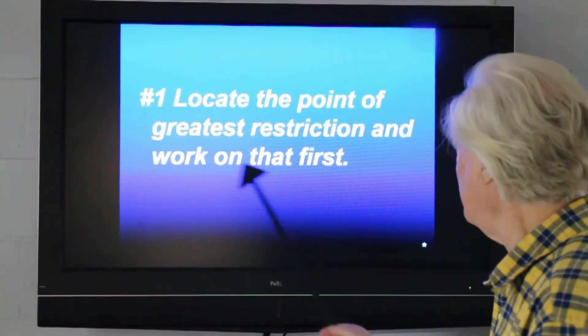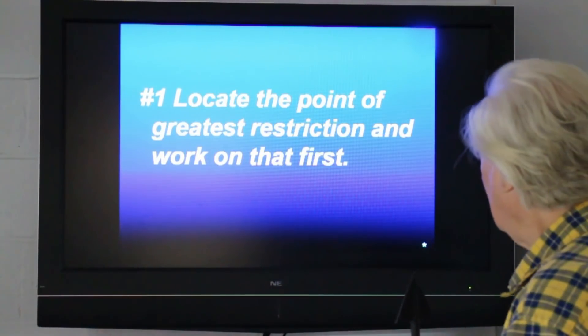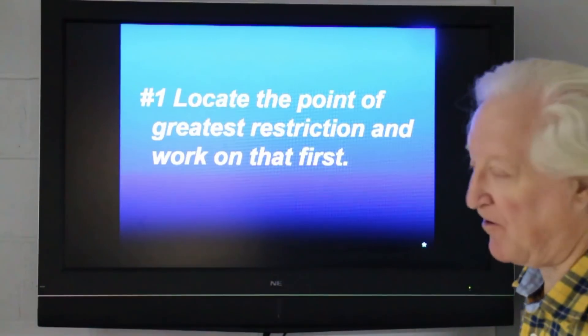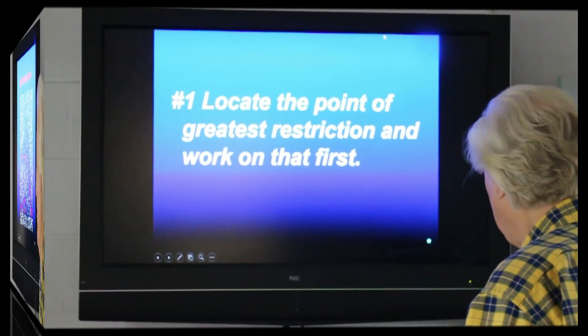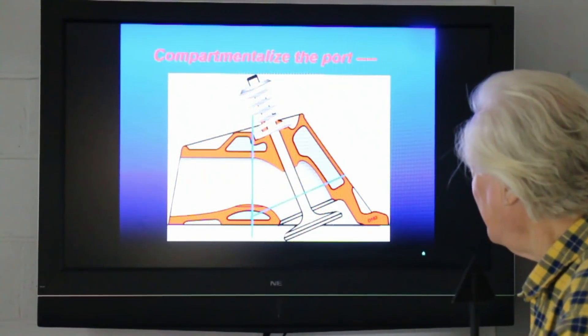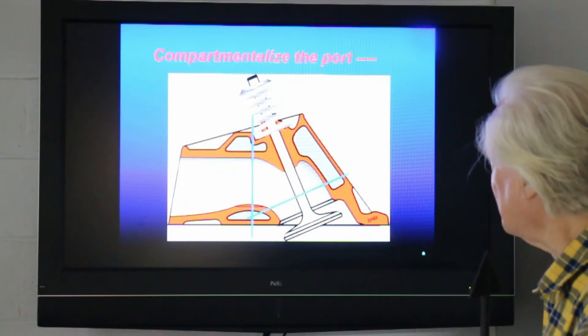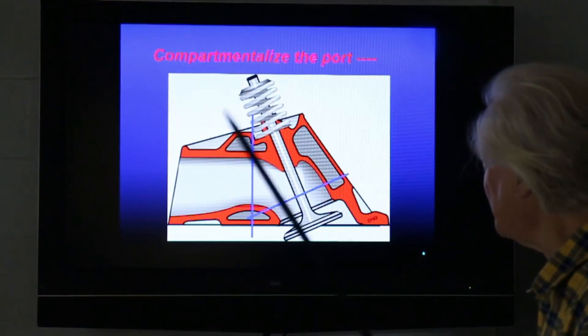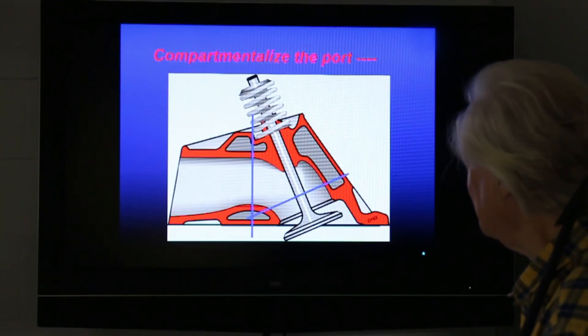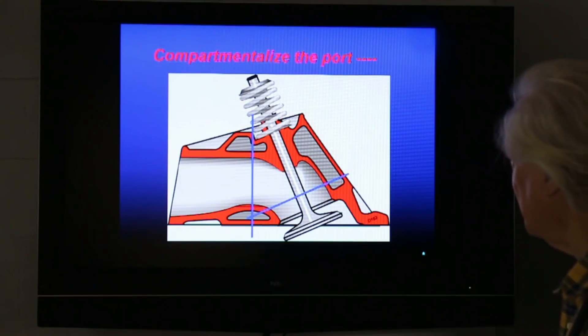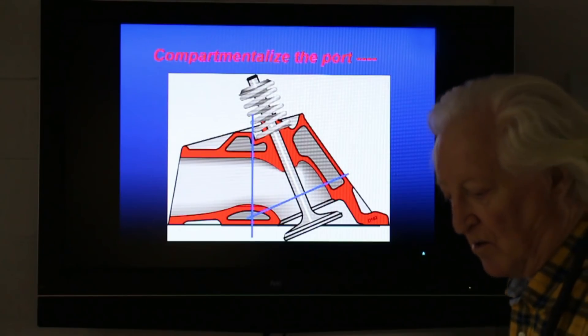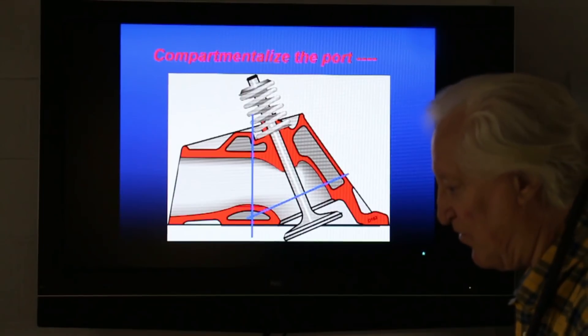Here is our starting point. Locate that most resistive point to flow and work from there. What we're going to do is compartmentalize the port. Now this is a real cylinder head here. This is a cross section of a 186 Chevy, small block Chevy casting, right?